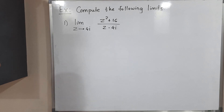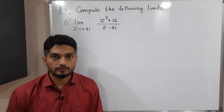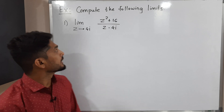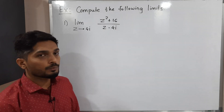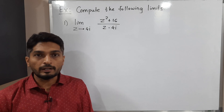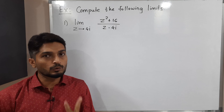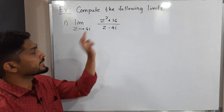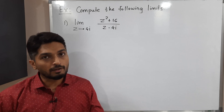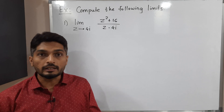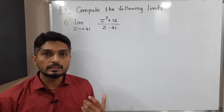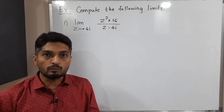Hi everyone. In this video we are going to solve two examples. Here we have to find the value of the limit as z tends to 4i of (z² + 16) / (z - 4i). To find the value of this limit there will be two ways. First, you can directly put z = 4i. If you get a value, that will be the limit. If you get an indeterminate form, we need to use some formulae and simplify it.